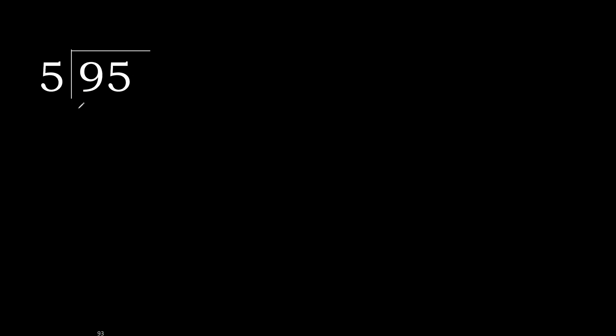95 divided by 5. 9 is not less, therefore work with 9. 5 multiplied by which number is nearest to 9, but not greater? 5 multiplied by 2 is 10 — 10 is greater. 5 multiplied by 1 is 5. 5 is not greater. 9 minus 5 is 4.